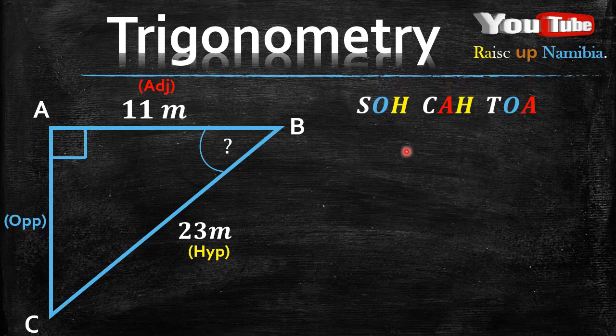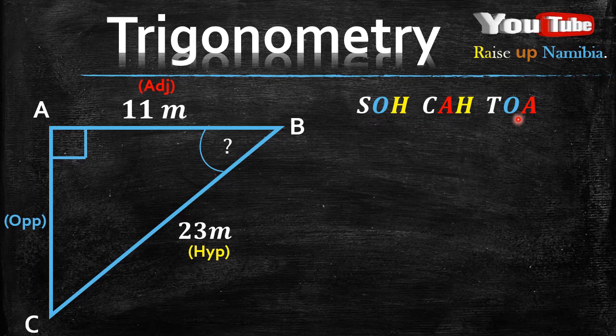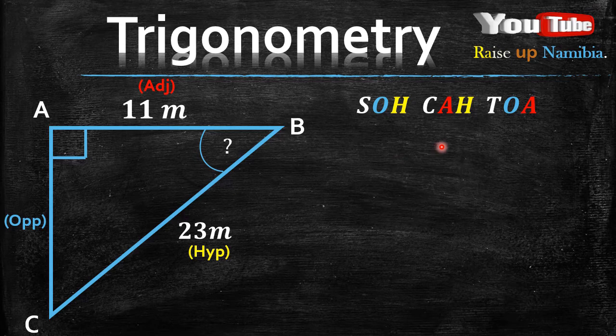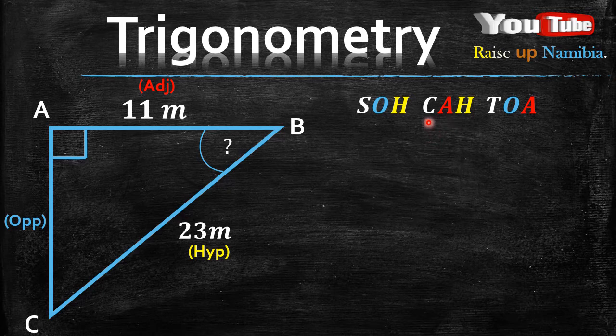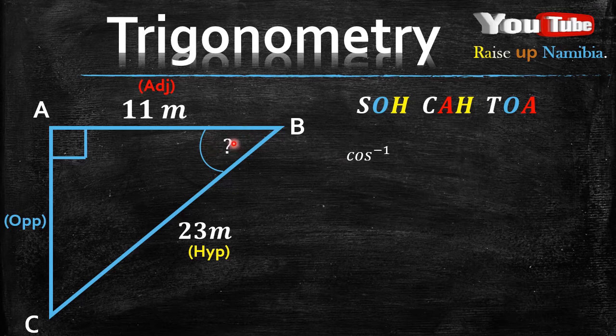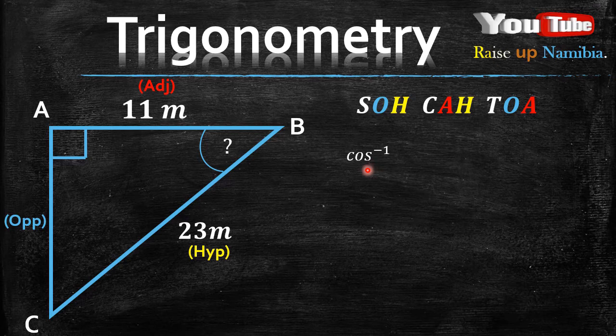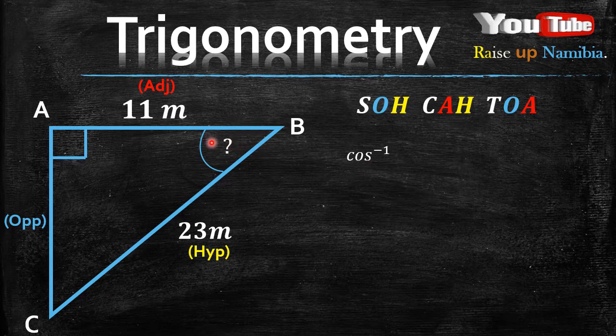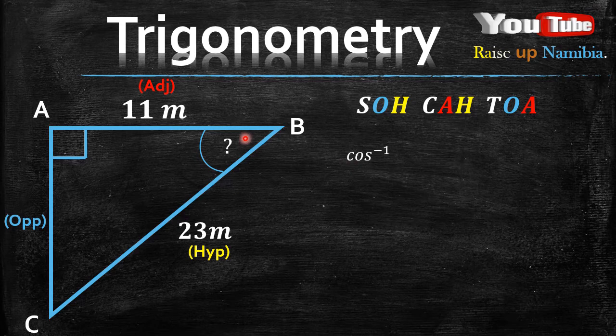So in our word SOH CAH TOA, we look for the three-letter term that does not have an O for the opposite. So which three-letter term is that one? It's the one in the middle, which is CAH. It doesn't have an O. So we know in CAH, the C stands for cosine. But now because we are looking for the angle of the triangle, we don't just use cosine. We use the inverse of cosine. And then after we write the inverse of cosine, normally we would write whatever angle we are given. But in this case, since we are not given an angle, we write the angle's name. In this case, this angle's name is B. So we write the angle B equals.